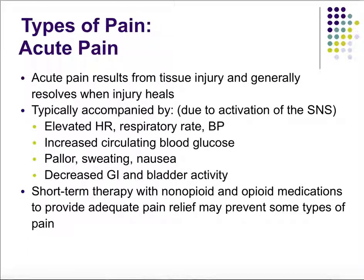There are different types of pain: acute and chronic. Acute pain results from tissue injury and is generally resolved when the injury heals. It's short-lasting and accompanied by activation of the sympathetic nervous system: elevated heart rate, increased respiratory rate, increased blood pressure, increased circulating blood glucose, pallor, sweating, nausea, and decreased GI and bladder activity. Short-term therapy uses non-opiates or opiate medications to provide pain relief.